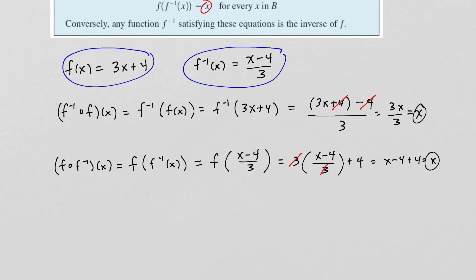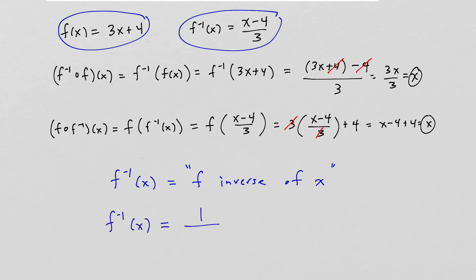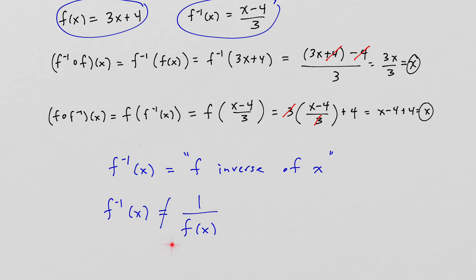One small detail: f inverse of x — the notation we use — denotes the inverse function. The negative 1 here does not denote an exponent; it does not mean to take the reciprocal of your function. It is the symbol we use to indicate the inverse of a function. So be careful not to make this mistake — this negative 1 doesn't have any numerical value in relation to the function itself.